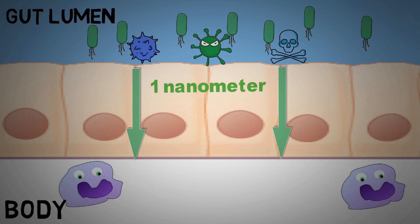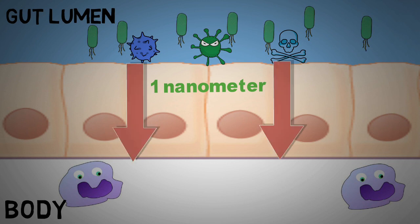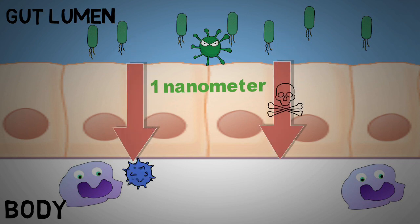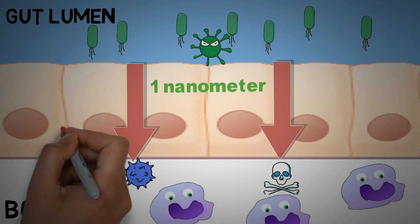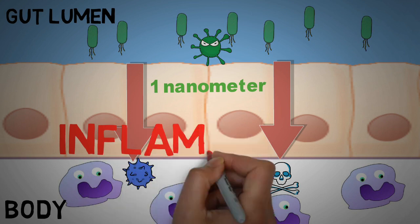However, under some conditions the permeability might increase, which allows entry to potentially harmful and definitely unwelcome substances. The immune system then recognizes and eliminates those substances, thereby causing inflammation.